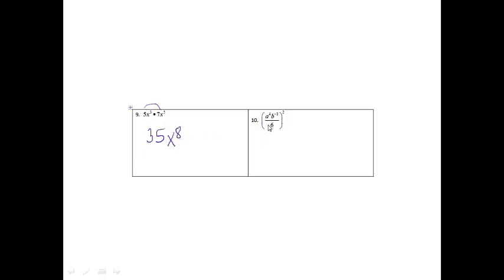Alright, on number 10, again, I'm going to use the law of exponents. And if I have parentheses, I know I'm going to multiply this two by all of the powers inside. So I'm going to have a to the eighth, b to the negative six, over 6 to the second. Every part gets the power. And remember, this one really had an invisible one on it, so 1 times 2 was 2. That's where that came from.